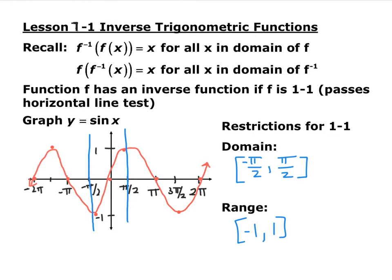If we were to choose, for instance, zero to π, it wouldn't be one-to-one and it wouldn't pass the horizontal line test, and you would miss the negatives. So we restrict it as the fourth quadrant, negative π/2 to zero, and the first quadrant, zero to π/2. Now our function is one-to-one and we can have an inverse function from it.